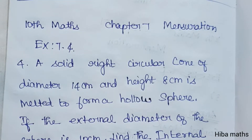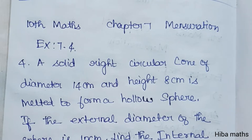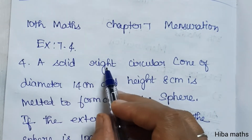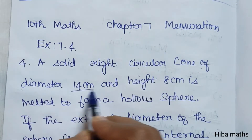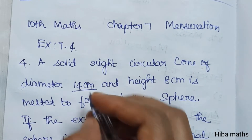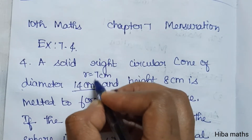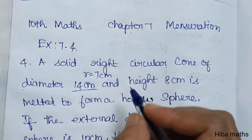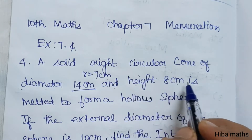Hello students, welcome to Hibamax 10 standard, Chapter 7 Mensuration, Exercise 7.4, fourth question. A solid right circular cone of diameter 14 centimeters — so radius is 14 divided by 2, which is 7 centimeters — and height is 8 centimeters.